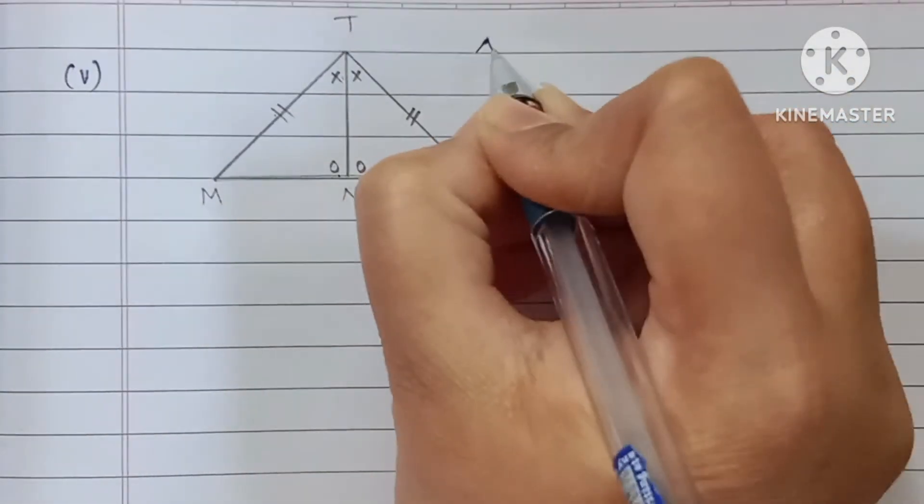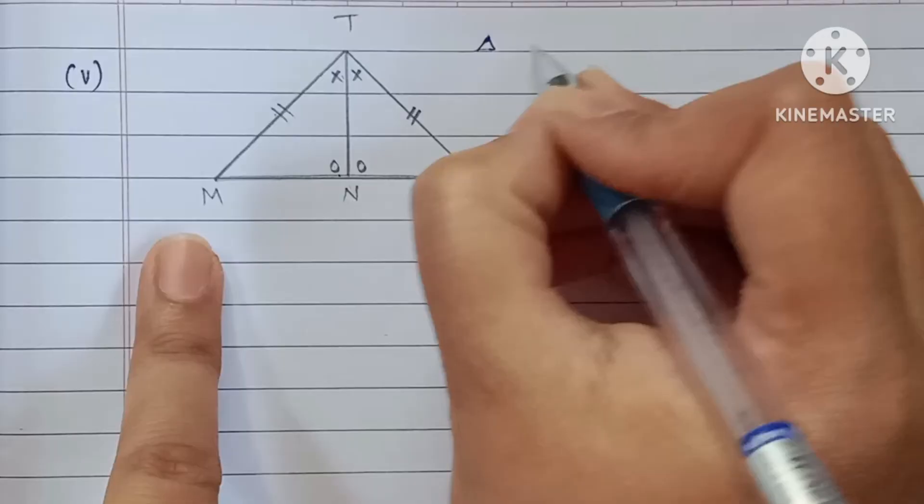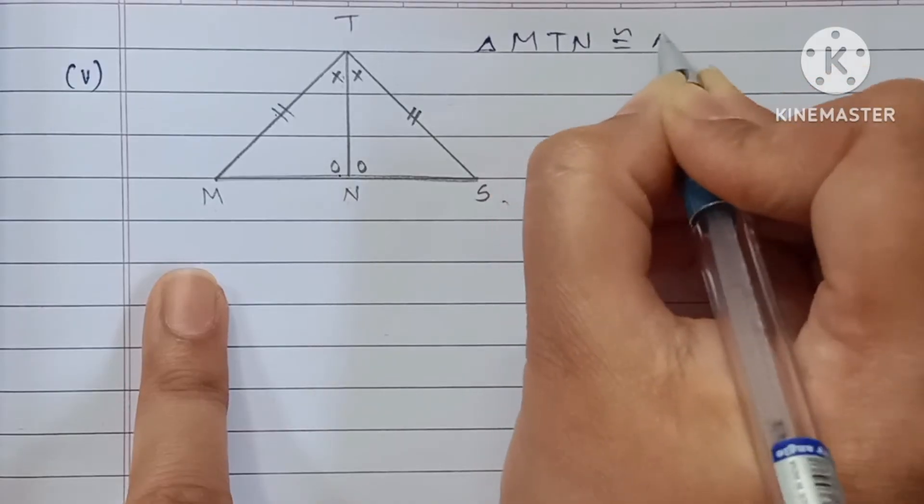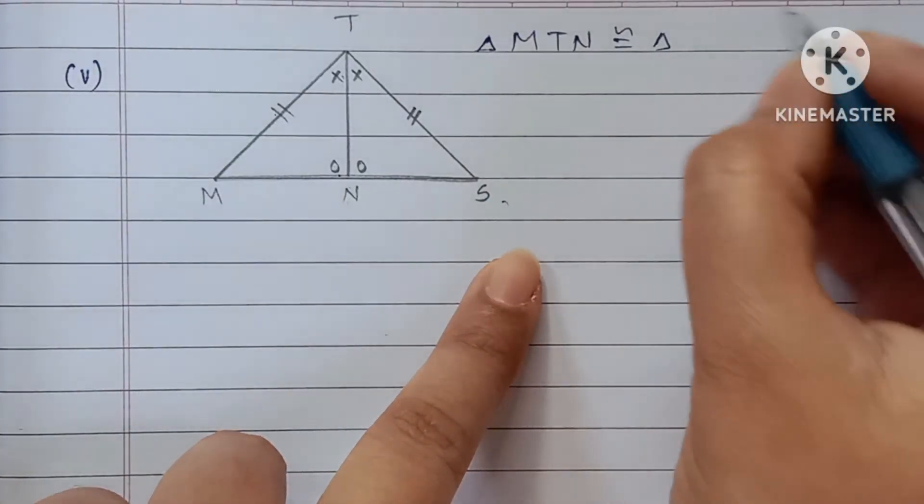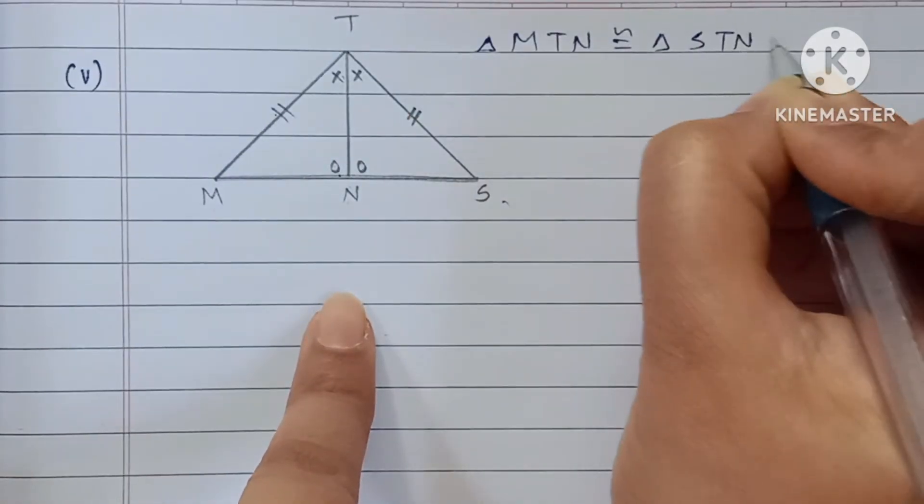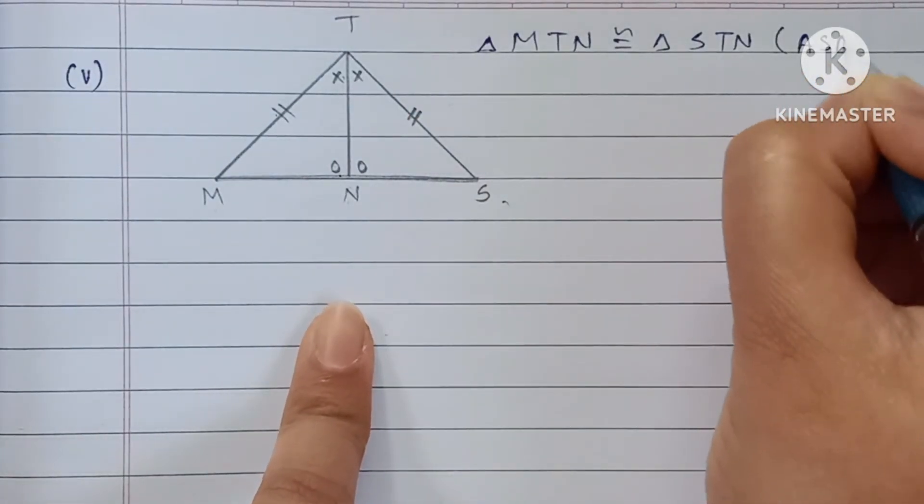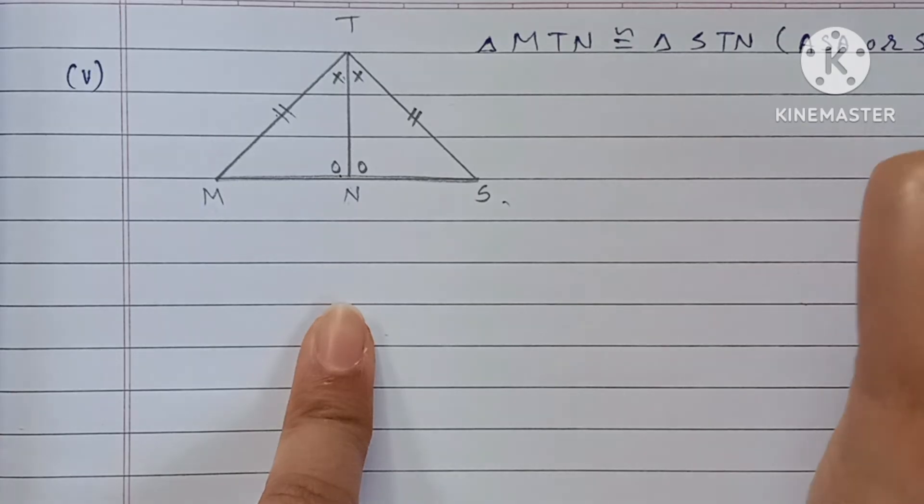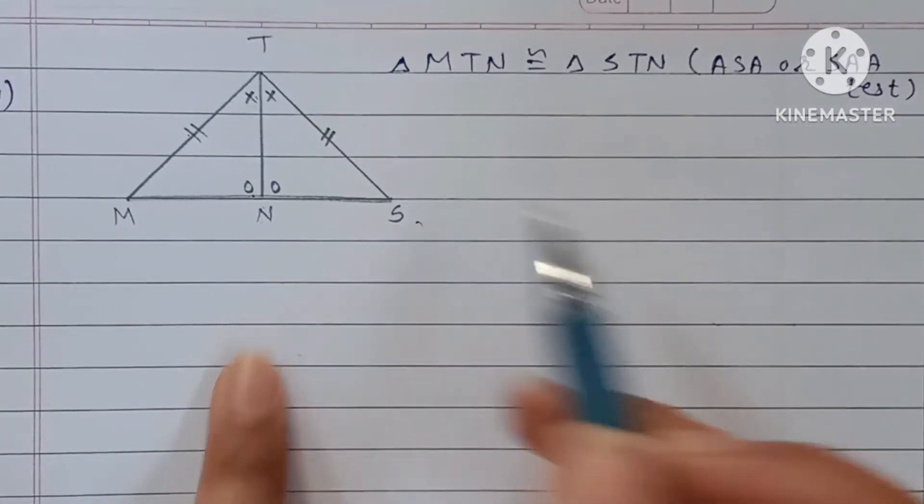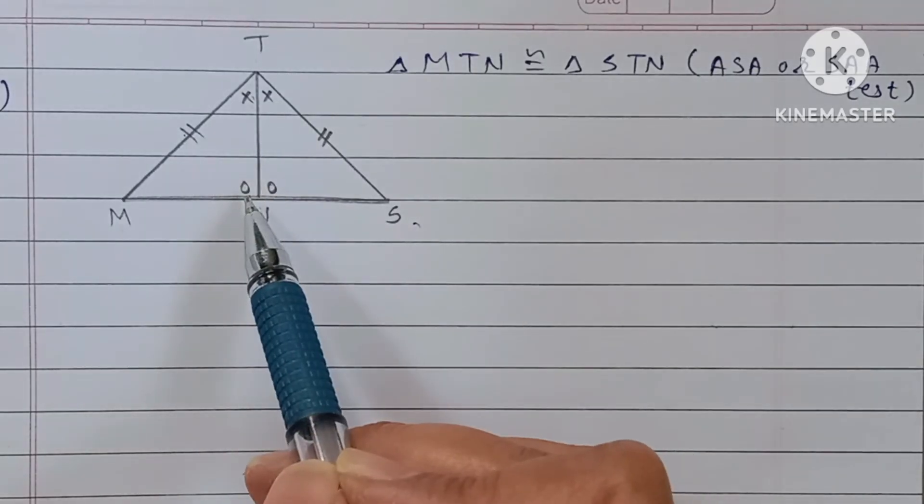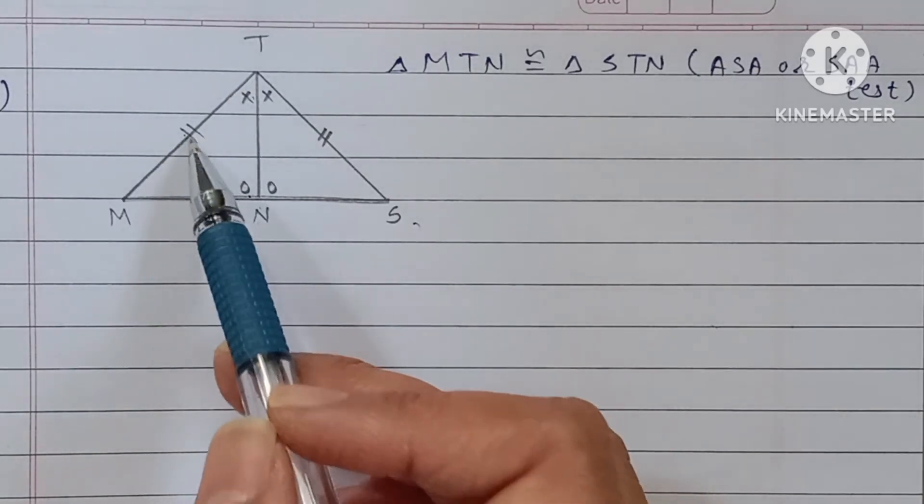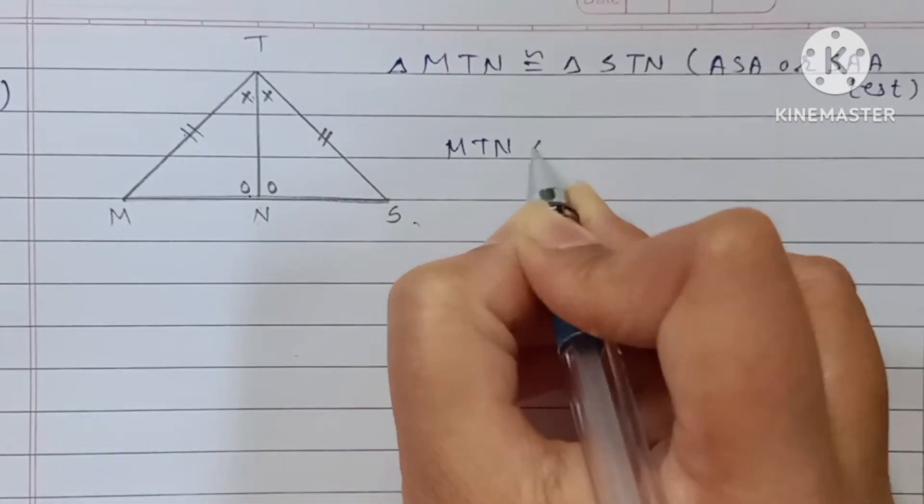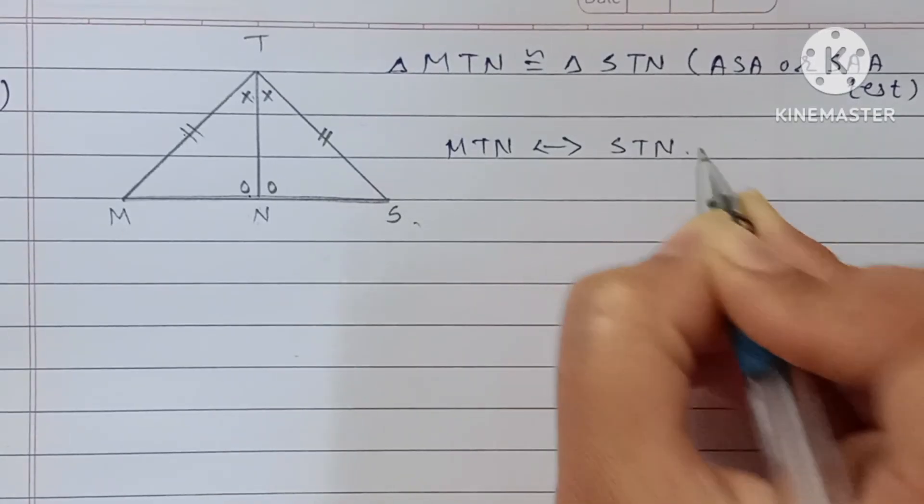First write down the names of the triangles. Triangle MTN is congruent with triangle STN by ASA or SAA test. Angle-side-angle or side-angle-angle. And one-to-one correspondence: MTN corresponds to STN.